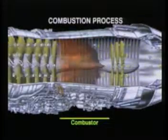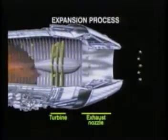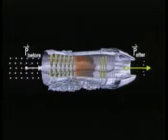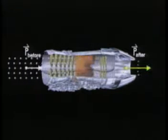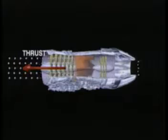This high energy gas expands through the turbine and then accelerates out through the exhaust nozzle. The turbine extracts some of the gas's energy and uses it to turn the compressor. The net result of these three processes is a net force exerted by the engine on the air that increases the air's momentum. By Newton's third law, the equal and opposite reaction is the thrust exerted on the engine.